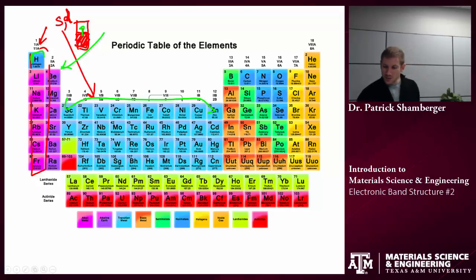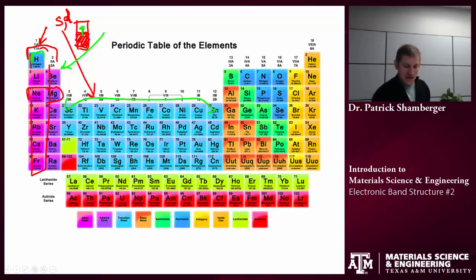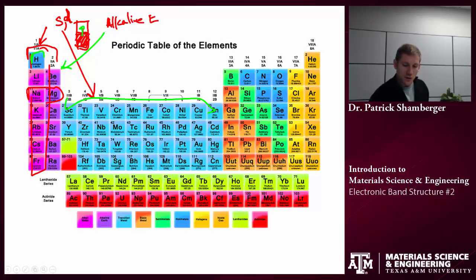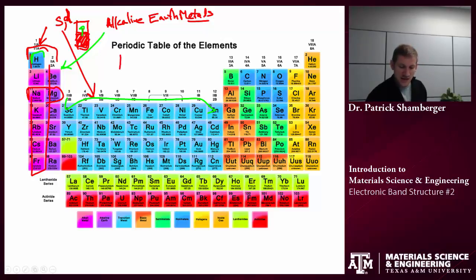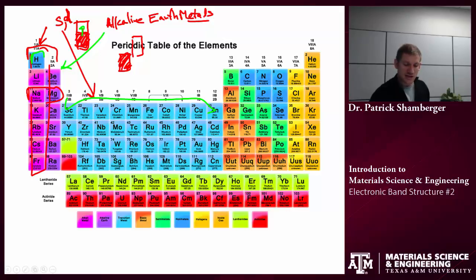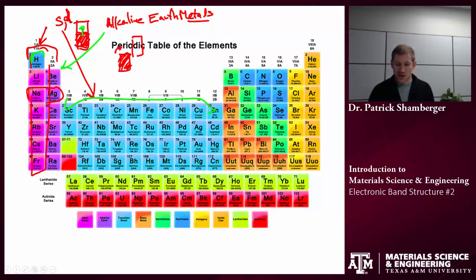The alkaline earths are a little different because they would have a full S orbital — for example, magnesium has a full 3S orbital. But we think of these as metals; we call them the alkaline earth metals. They do behave metallically, but it's a different picture than the alkali or transition metals. In this case, the 3S orbital and the P or D orbitals end up overlapping, so even though I have a full S orbital, there are still available energy levels at slightly higher energy for these electrons to be excited to. This is like the semi-metal picture.